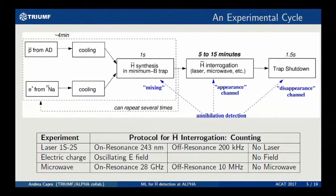In this slide I'm trying to explain how we do the experiment through the experimental cycle, and this is useful to understand why we need refined algorithms to detect anti-hydrogen. We start with antiprotons and positrons, we cool them, and we trap about a thousand atoms in about a second. Then we start what I call here the interrogation phase. We approach the anti-hydrogen either with laser light, or with a gravitational field, or with microwaves, and this phase lasts from 5 to 15 minutes.